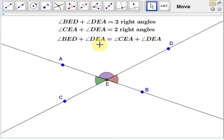So, if we remove angle DEA from both sides of this equality, we see that angle BED is equal to angle CEA.